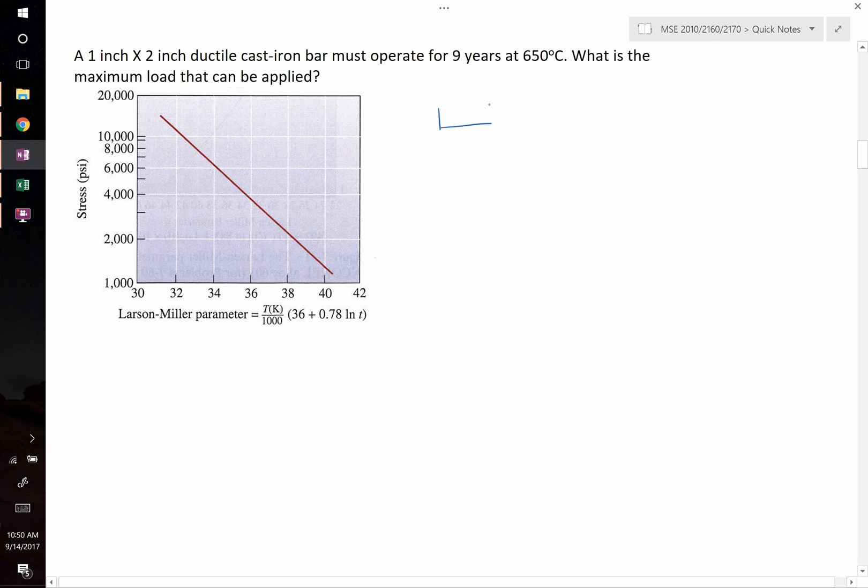Let's start by writing out what we know. The sample is 1 by 2 inches. The plot is given in psi, pounds per square inch, so we'll use imperial units. The cross-sectional area of this component, which we're going to need to figure out force eventually, is just equal to 2 square inches.